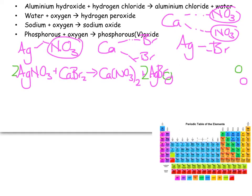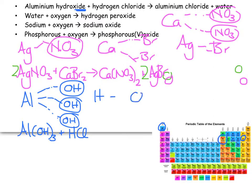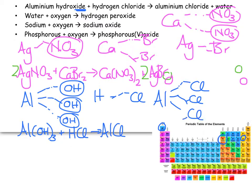Aluminium hydroxide: Al is in group 3 with 3 arms, hydroxide OH from the sheet has 1 arm — it's the only ion that doesn't come straight off the periodic table — so Al(OH)₃. Plus hydrogen chloride HCl (hydrochloric acid): hydrogen group 1, chlorine group 7, one arm each — HCl. Products: aluminium chloride AlCl₃ (aluminium has 3 arms, chlorine has 1), plus water H₂O.